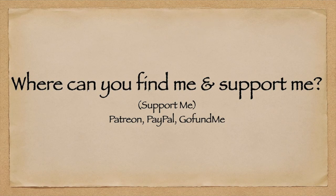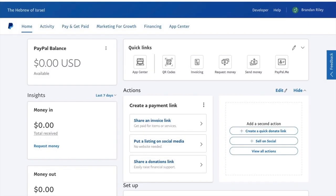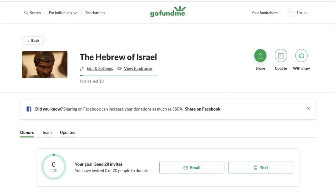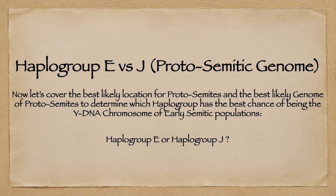If you want to support me financially for the channel, you can look at my Patreon, PayPal, and GoFundMe. With all of that out of the way, let's begin. Now let's cover the best likely location for proto-Semites and the best likely genome of proto-Semites to determine which haplogroup has the best chance of being the Y chromosome of early Semitic populations: haplogroup E or haplogroup J.